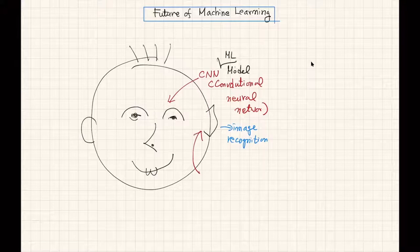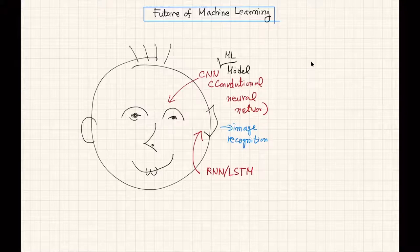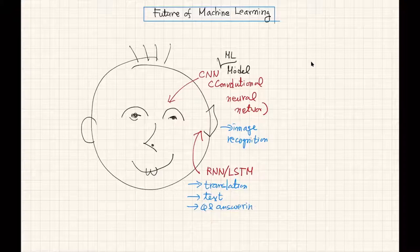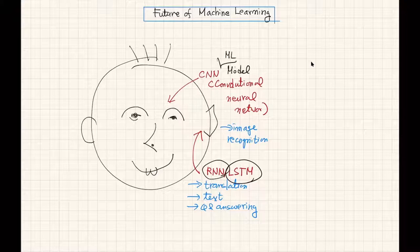The second model, which is popular these days, is RNN and LSTM. RNN means recurrent neural network, and LSTM stands for long-term short-term memory. Those models are usually useful for translation, text generation, or question and answering. From next Monday, I'm going to talk a lot about RNN and LSTM.